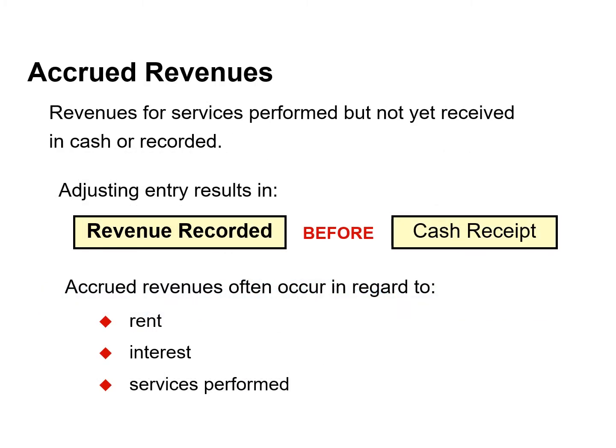Revenues for services performed but not yet recorded are accrued revenues. Accrued revenues may accumulate or accrue with the passing of time, as in the case of interest revenue. Companies do not record interest revenue on a daily basis because it is impractical to do so. Accrued revenue may also result from services that have been performed but not yet billed nor collected, such as commissions and fees.